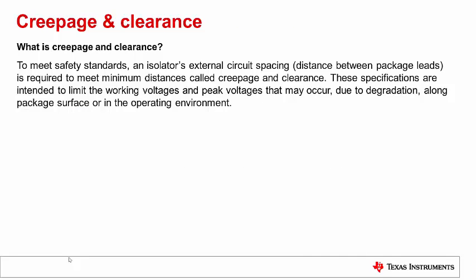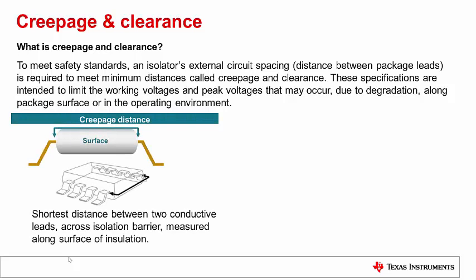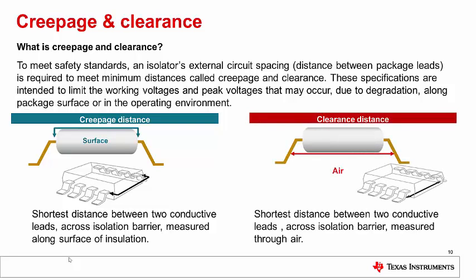What are creepage and clearance? To meet safety standards, an isolator's external circuit spacing — which is the distance between package leads — is required to meet minimum distances called creepage and clearance. These specifications are intended to limit the working voltages and peak voltages that may occur due to degradation along the package surface or in the operating environment. Creepage distance is the shortest distance between two conductive leads across the isolation barrier, measured along the surface of insulation. Clearance distance is the shortest distance between two conductive leads across the isolation barrier, measured through air.